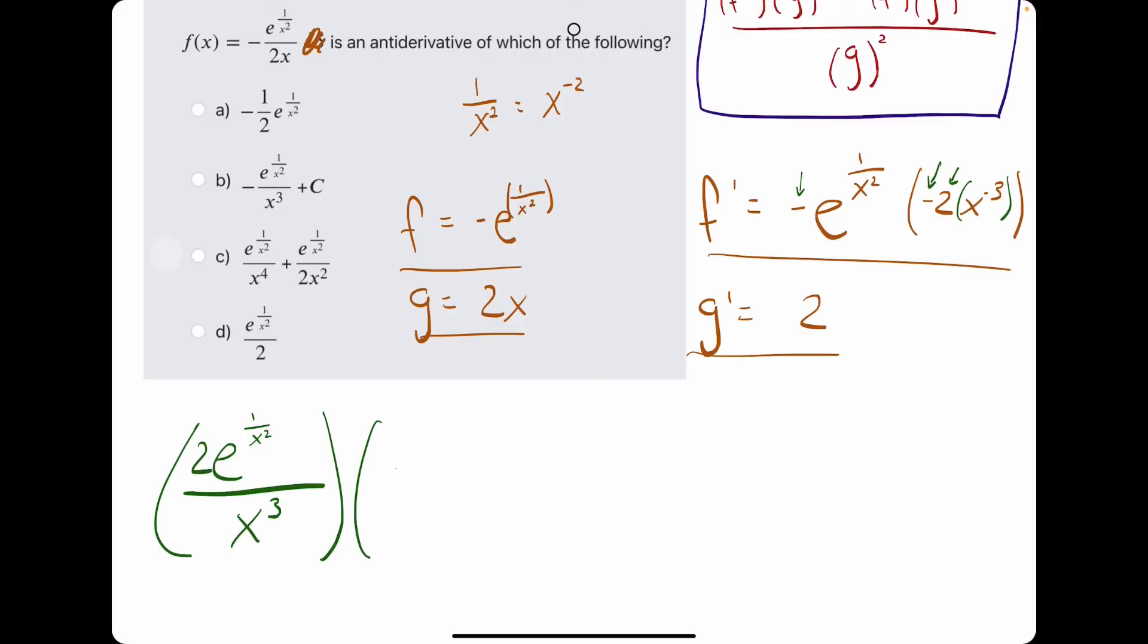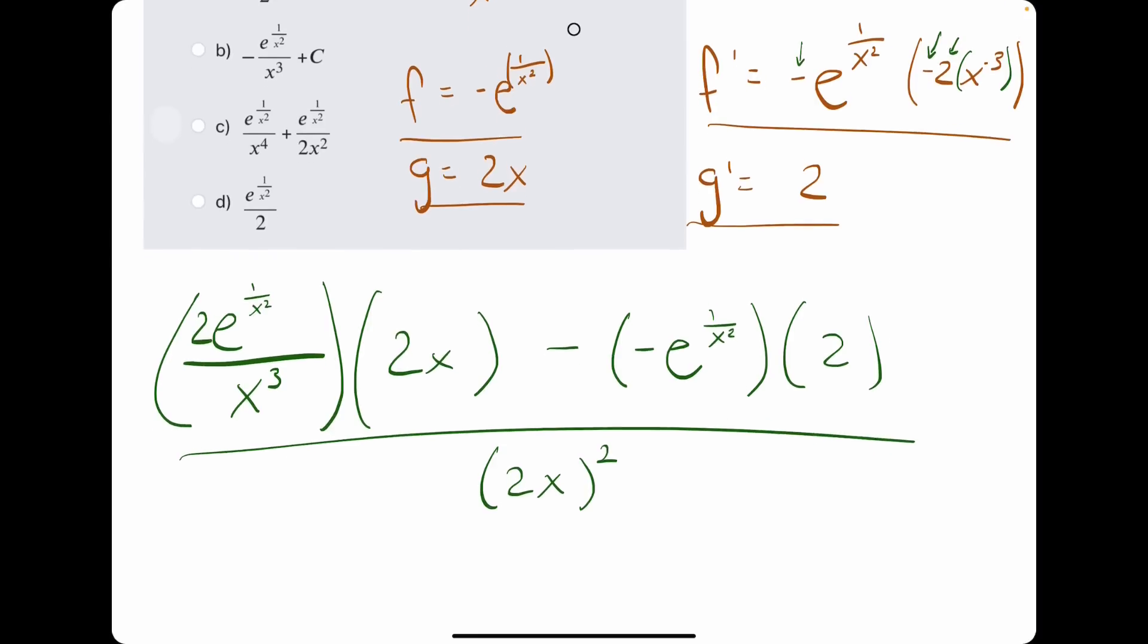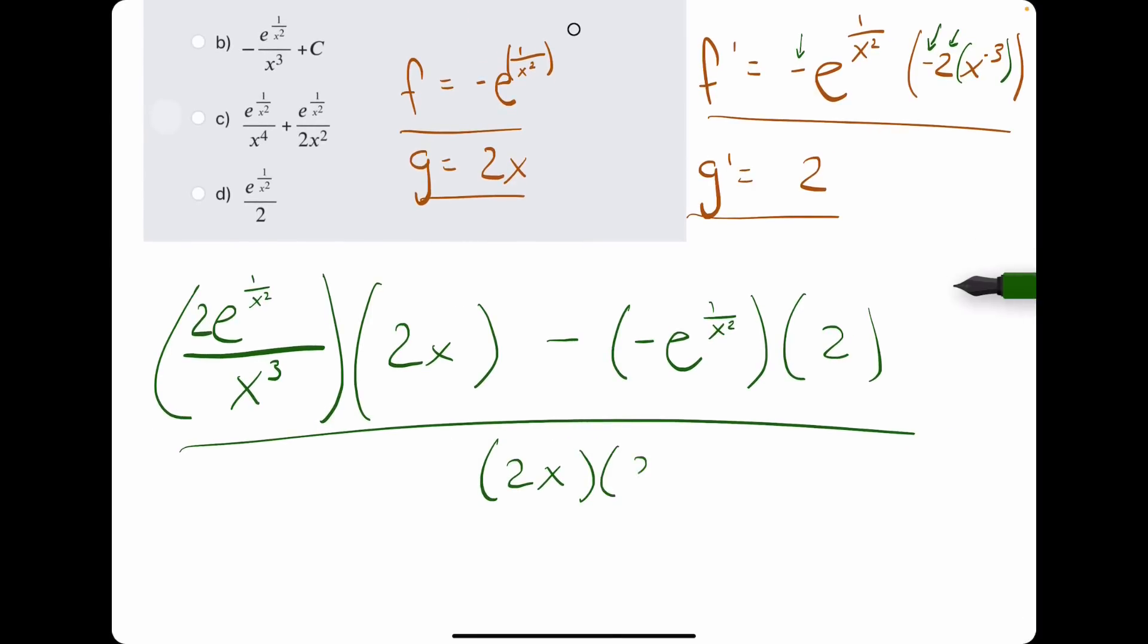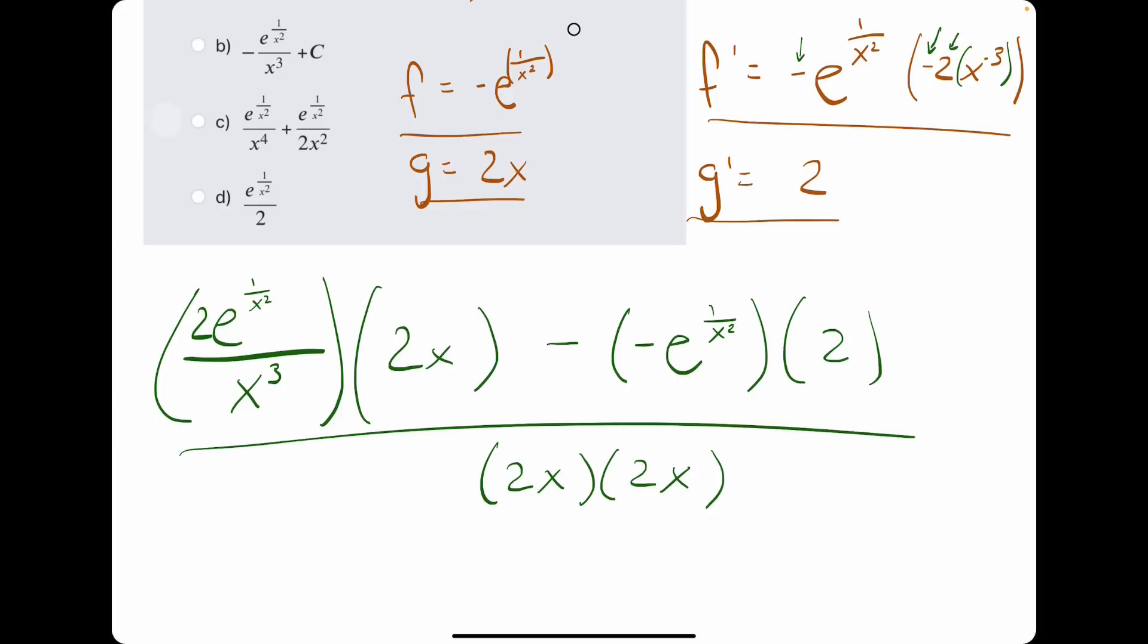So, then g is 2x. We have minus f, which is negative e to the 1 over x squared, times g prime, which is 2. And we divide this by g squared. All right. What can we cancel? Let's do the same thing we did last time. The bottom squared is just 2x times 2x. We can cancel a 2, a 2, and a 2 from each term.